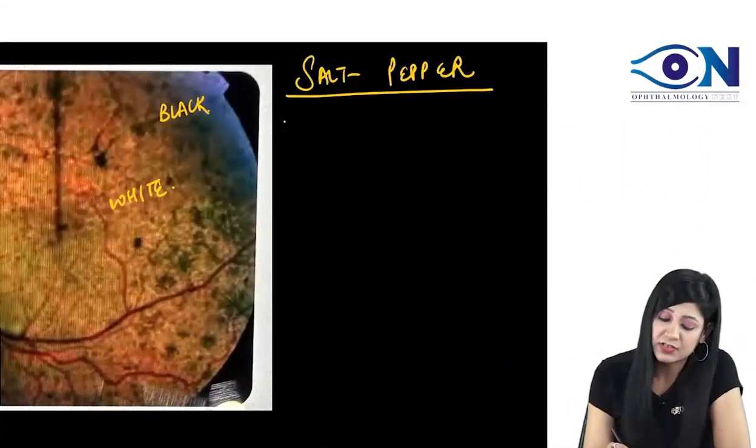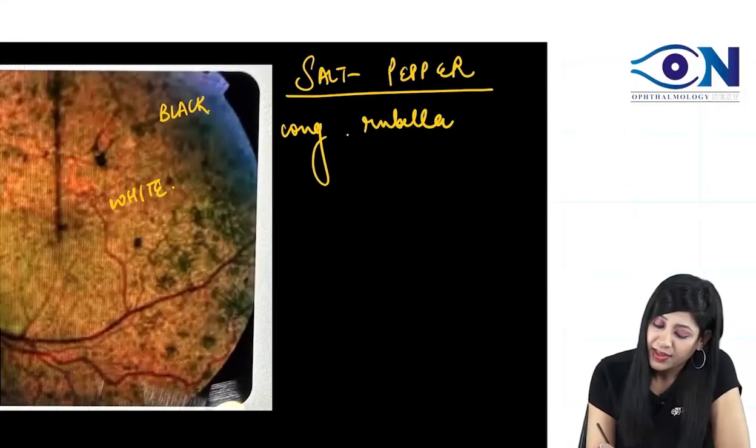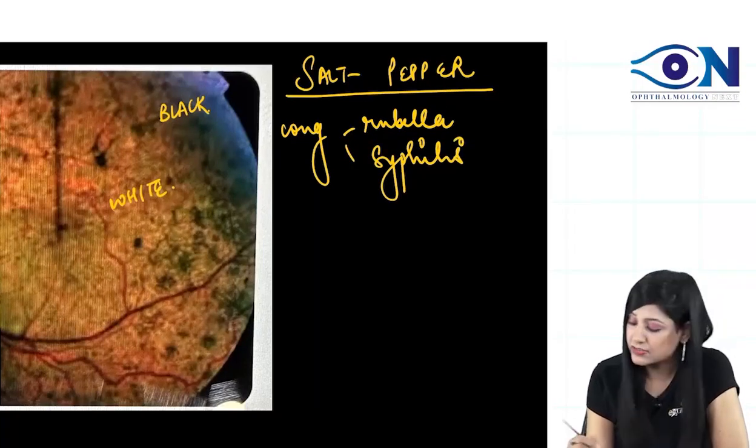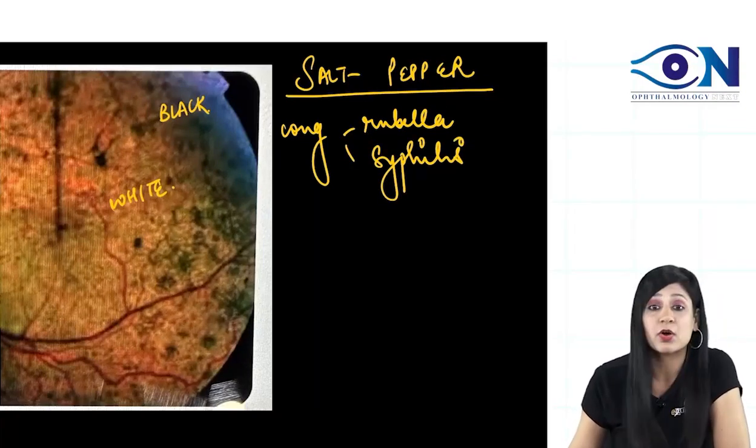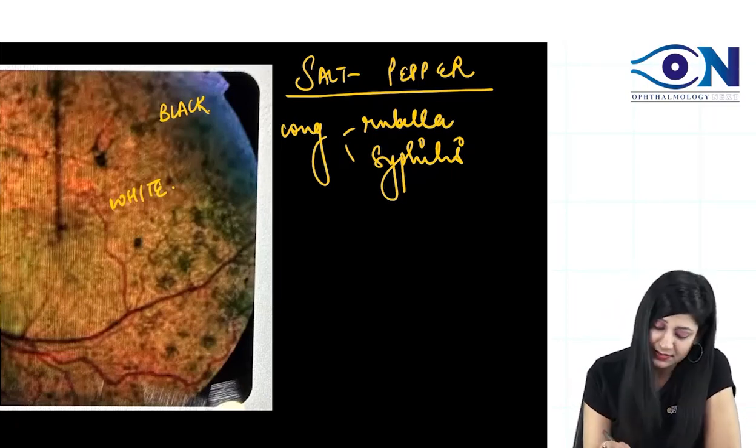Now, what are the important causes? The first most common cause is congenital rubella and we have congenital syphilis. Congenital rubella and congenital syphilis are the most important causes that we get in cases of salt and pepper retinitis.